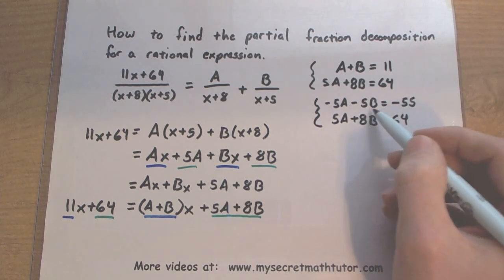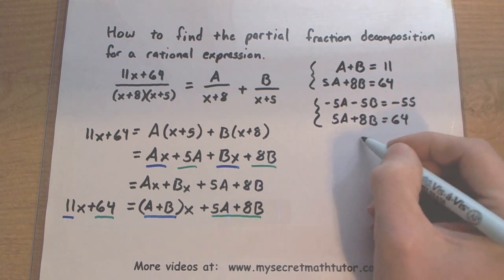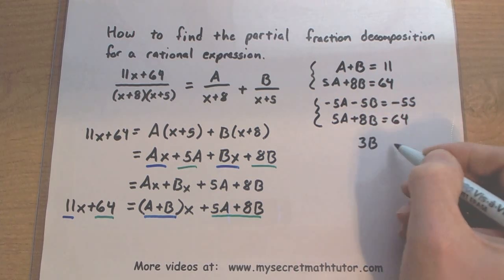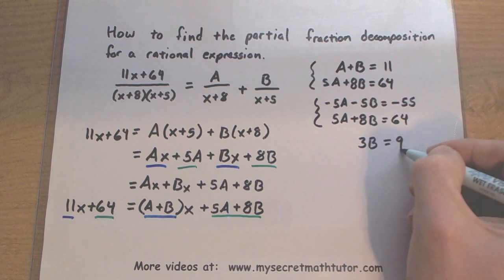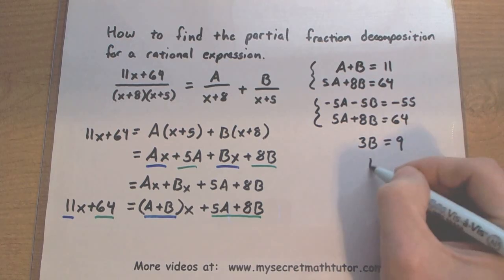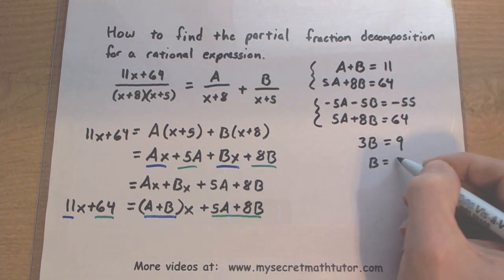Negative 5B plus 8B, we're going to say positive 3B equals negative 55 plus 64, which looks like a positive 9. So solving this will give us that B is equal to 3.